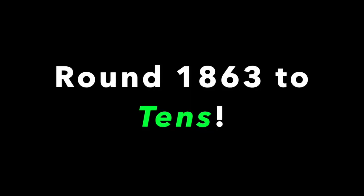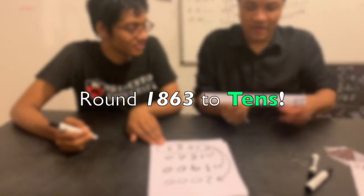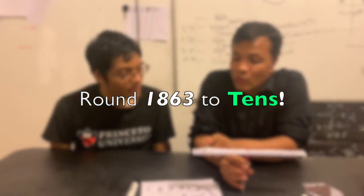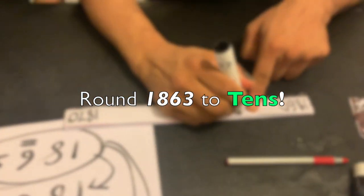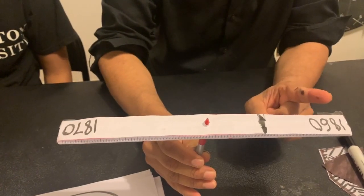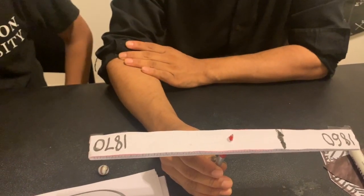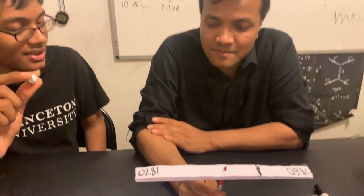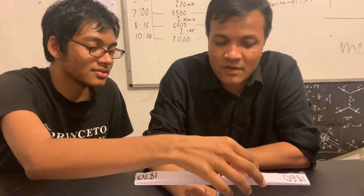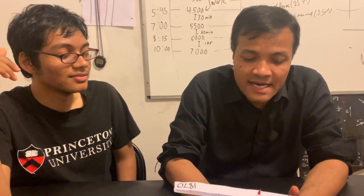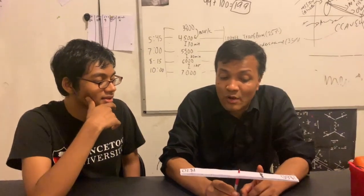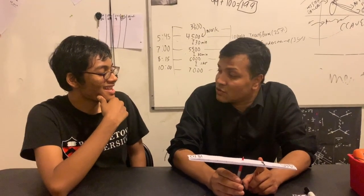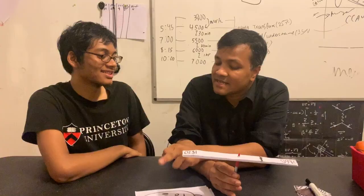1,863. Is 1,863 close to 1,860 or 1,870? Can I put the marble on the right place? Or you can put the marble on the right place. 1,863 is close. So what should we round to? 1,860. We should round to 1,860. If it is the 10th place — 10th place.